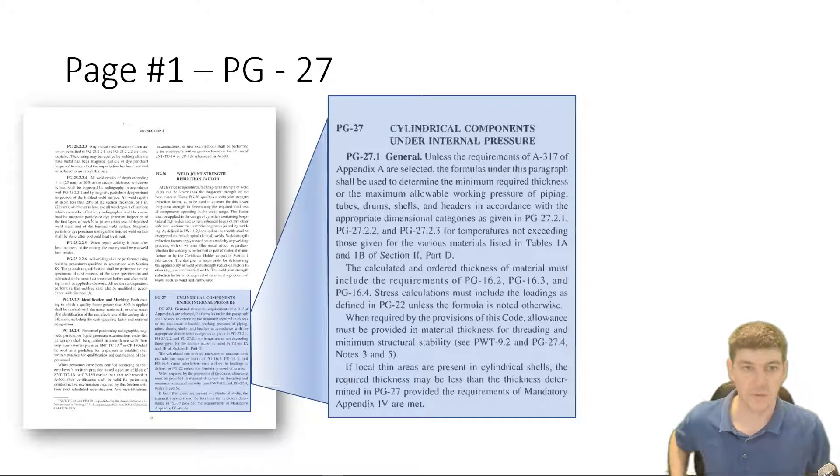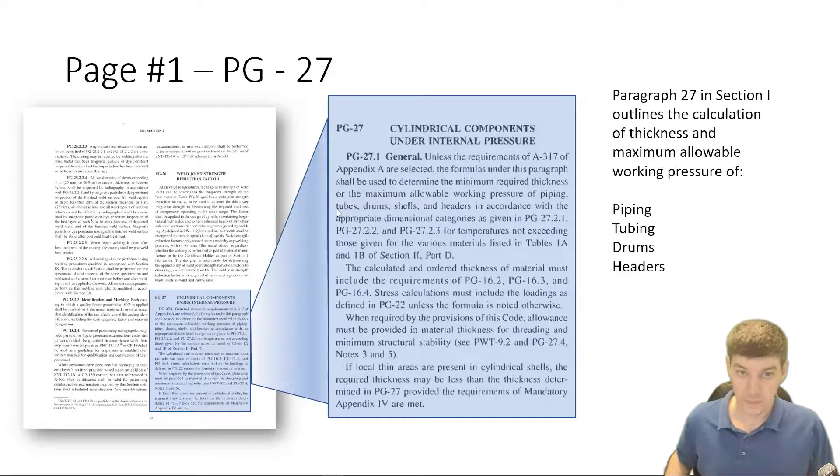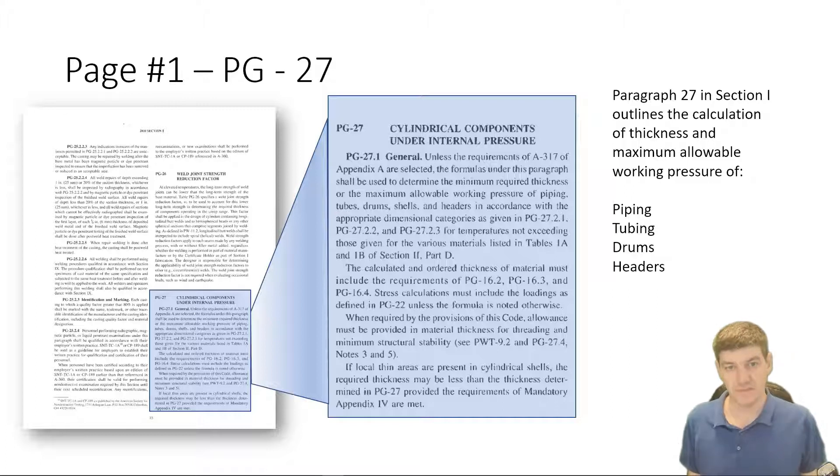And down at the bottom, what it says is cylindrical components under internal pressure. So in section one, the paragraph 27 outlines the calculations of thicknesses and maximum allowable pressure for piping, tubing, drums, and header. So this section, PG-27, is going to outline what we need to know for this week's material.